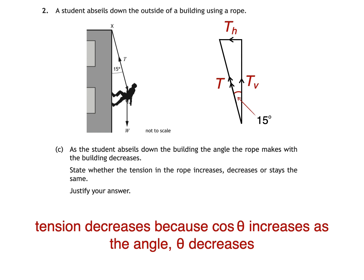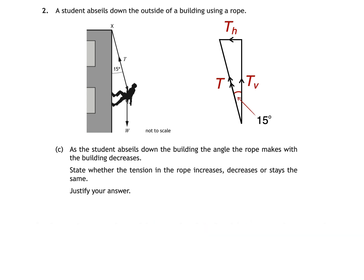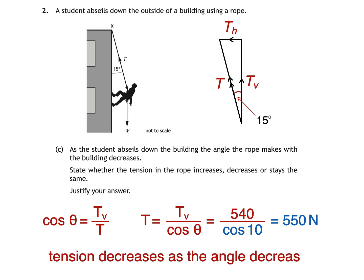Now since I care so much about your education, unlike that student who wasted your time earlier, I'll show you one last way to answer this part of the question. Here's the answer we got for part B of the question, where we were asked to calculate tension T in the rope. All we have to do is calculate tension again for a smaller angle, so that we're justifying by calculation. I'm going to pick an angle of 10 degrees, which gives us a tension force of 548 newtons, or to two significant figures 550 newtons. The final part is to state that tension decreases as the angle decreases. If you struggle to understand the first two explanations for part C, then you might want to go for this method when a similar question comes up.